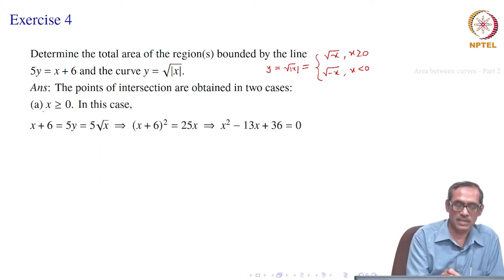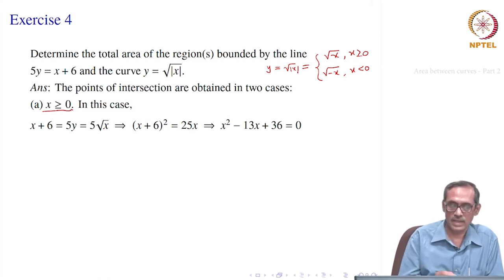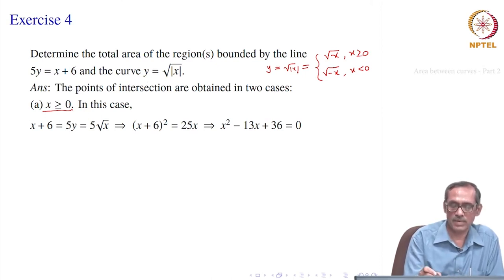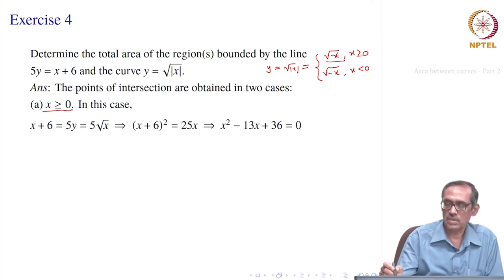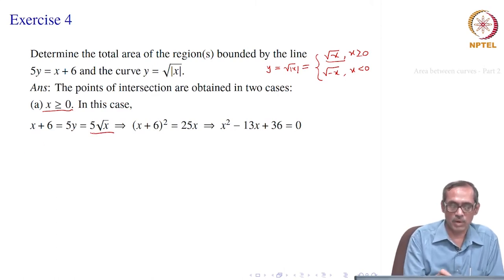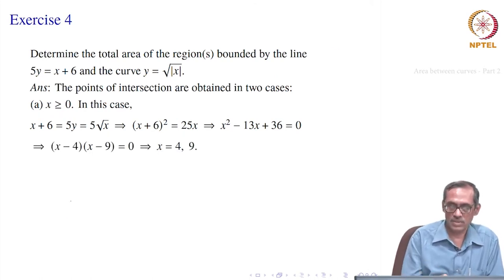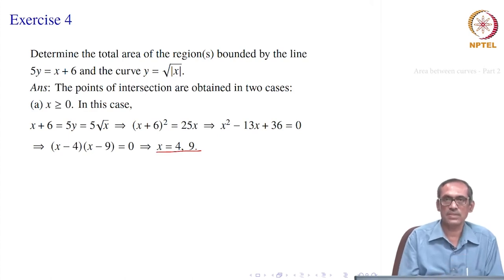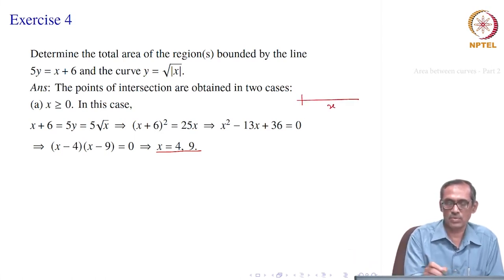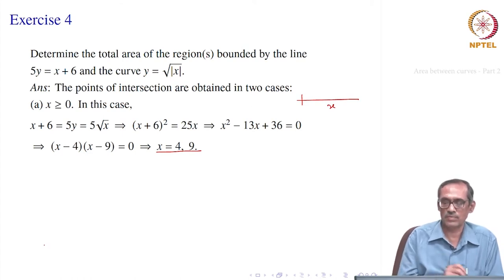For the first case, x greater than or equal to 0: we find the points of intersection. Setting 5y equal to x plus 6 and 5y equal to 5√x, eliminating y gives (x + 6)² equal to 25x. This expands to x squared minus 13x plus 36 equal to 0, which factors as (x minus 4)(x minus 9) equal to 0, giving x equal to 4 or x equal to 9.